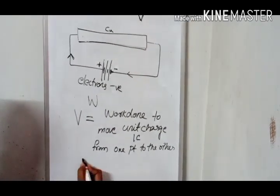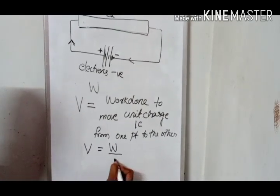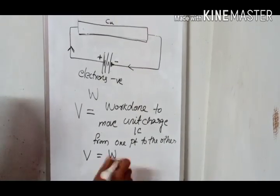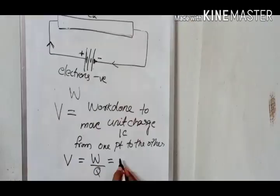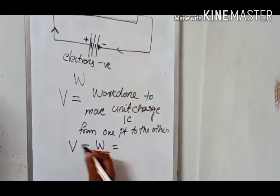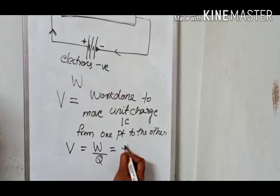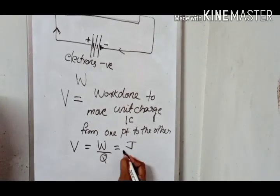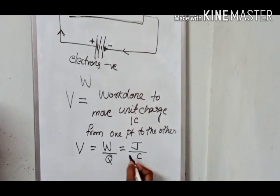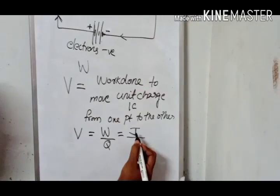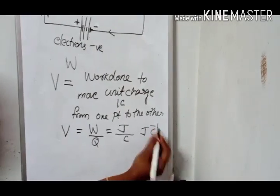So mathematically, potential difference is defined as work done divided by charge. The symbol for charge is Q. So potential difference is equal to work done divided by charge, i.e., V = W/Q. Now, what is the SI unit of potential difference? The SI unit of work done is joule. The SI unit of charge is coulomb. So the SI unit of potential difference is joule per coulomb, or joule coulomb raised to minus one.